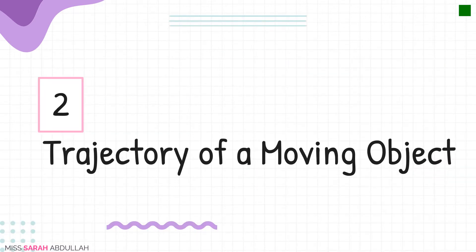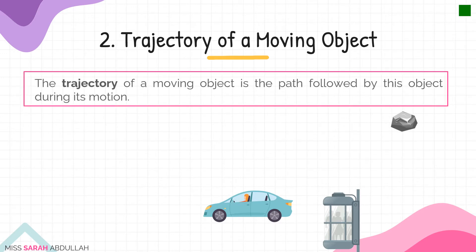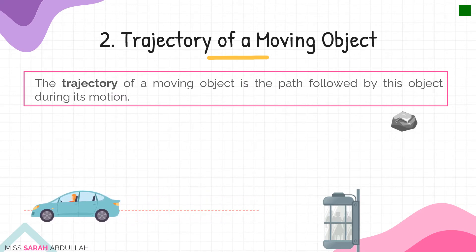Moving on to the second paragraph called the trajectory of a moving object. What do we mean by trajectory? The object has to be moving — let's say a car or any moving object. Trajectory is simply the path that is followed by this object during its motion. So if I have a car moving, the path followed by this car — you can see it is the dotted line — it is a straight line. This is the trajectory.